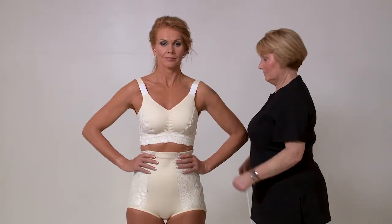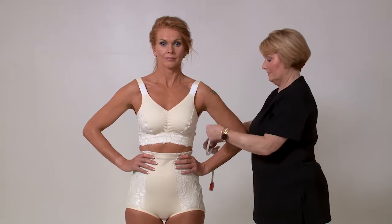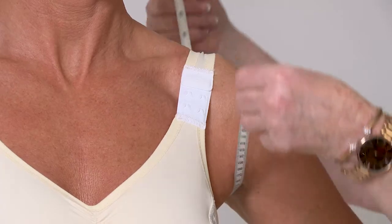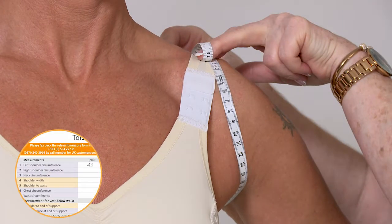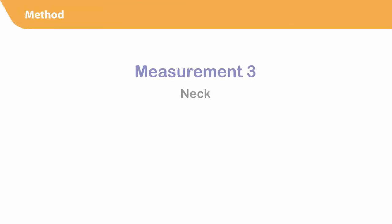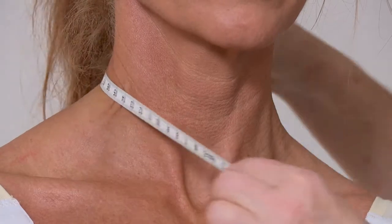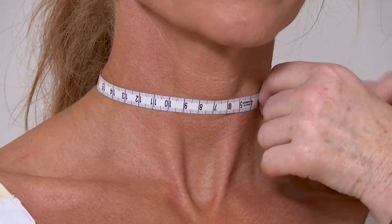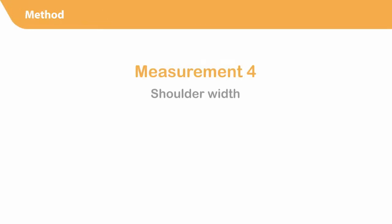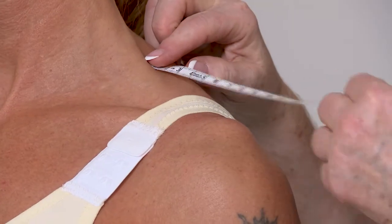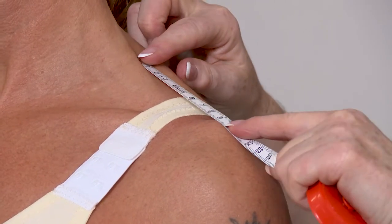Measurement number one: left shoulder circumference. Ask the patient to place their hands on their waist. Using the regular tape measure, bring the tape under the axilla, curve it around, finishing on the acromion process as demonstrated. Repeat the same process for measurement number two: right shoulder circumference. Measurement number three: neck circumference, taken at the center of the neck. Measurement number four: shoulder width, taken from the base of the neck to the actual point on the shoulder.